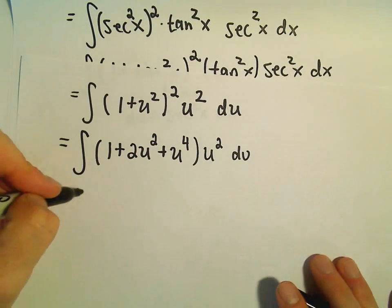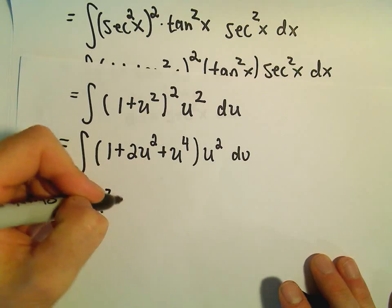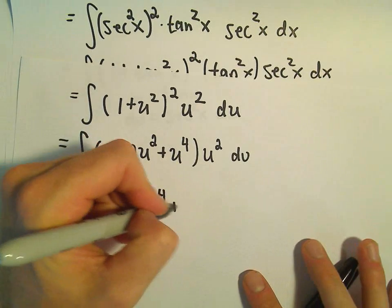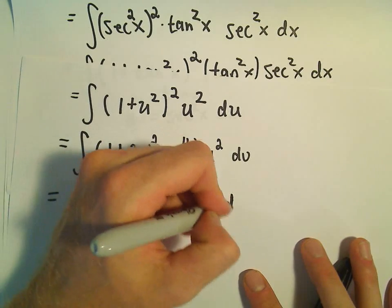u squared times 1 is just u squared. We'll get plus 2u to the fourth when we distribute, plus u to the sixth du.